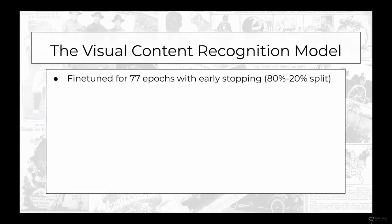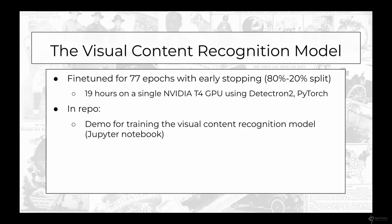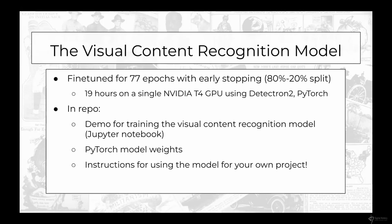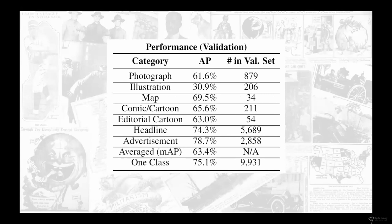Training took about 77 epochs, meaning about 19 hours on a single NVIDIA GPU — quite inexpensive in terms of time and cost. Much of the significant computing actually comes with performing inference across all of Chronicling America rather than training the model itself. In the GitHub repo for the project, we have a demo for training the model, the actual model weights, instructions for using the model in your own project, and notably the model is now included in LayoutParser — a pip-installable Python library for layout detection across digitized documents — making it very easy to get up and running with just a few lines of code.